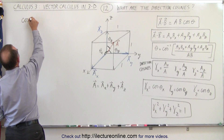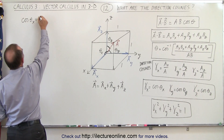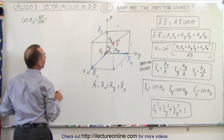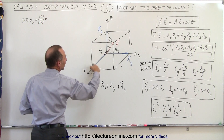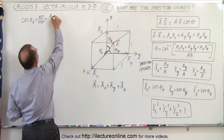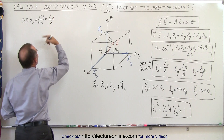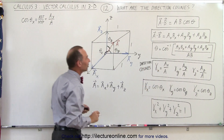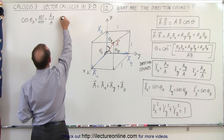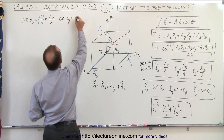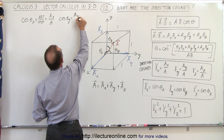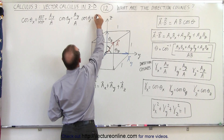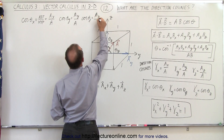The cosine of theta sub x is by definition the adjacent side over the hypotenuse. The adjacent side equals the magnitude of a sub x and the hypotenuse is a, so it's the ratio a sub x divided by a. Similarly, the cosine of theta sub y equals a sub y over a, and the cosine of theta sub z is defined as a sub z divided by a.